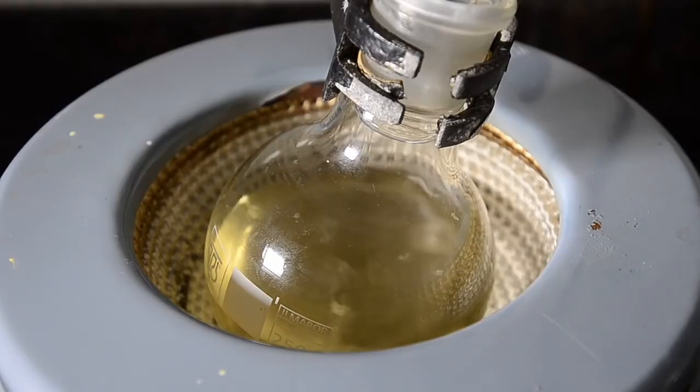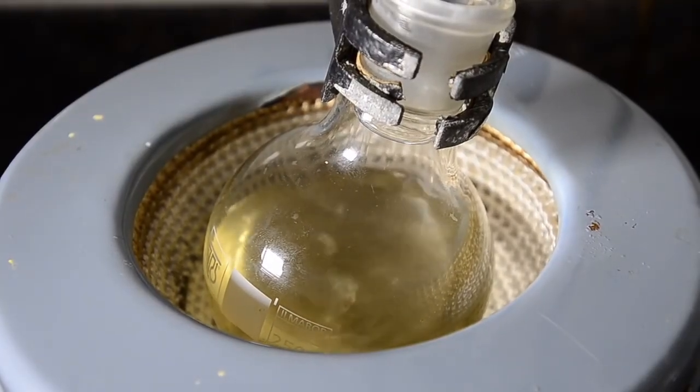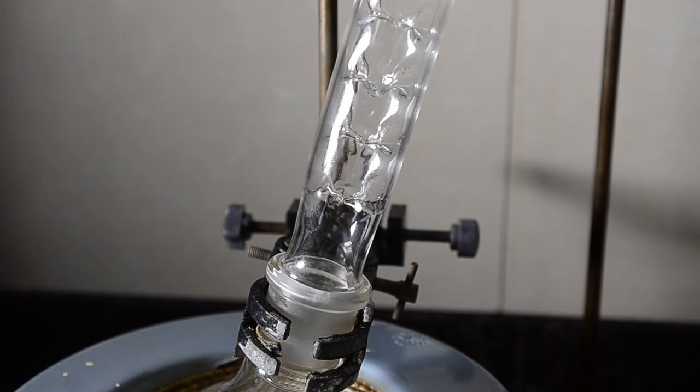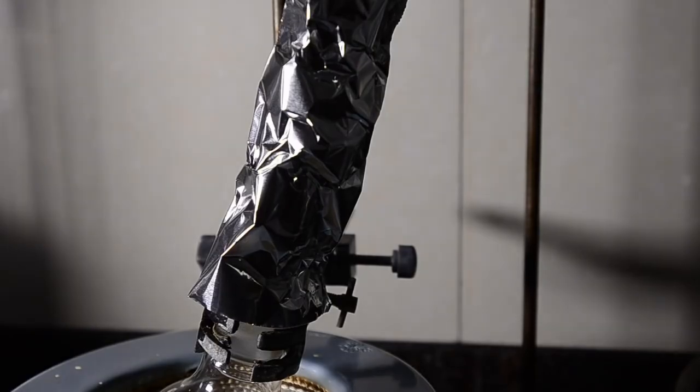Soon after heating strongly the liquid in the flask boils. And we get another nice solvent front climbing up the column. We used aluminum foil to insulate the column to make the distillation more efficient.